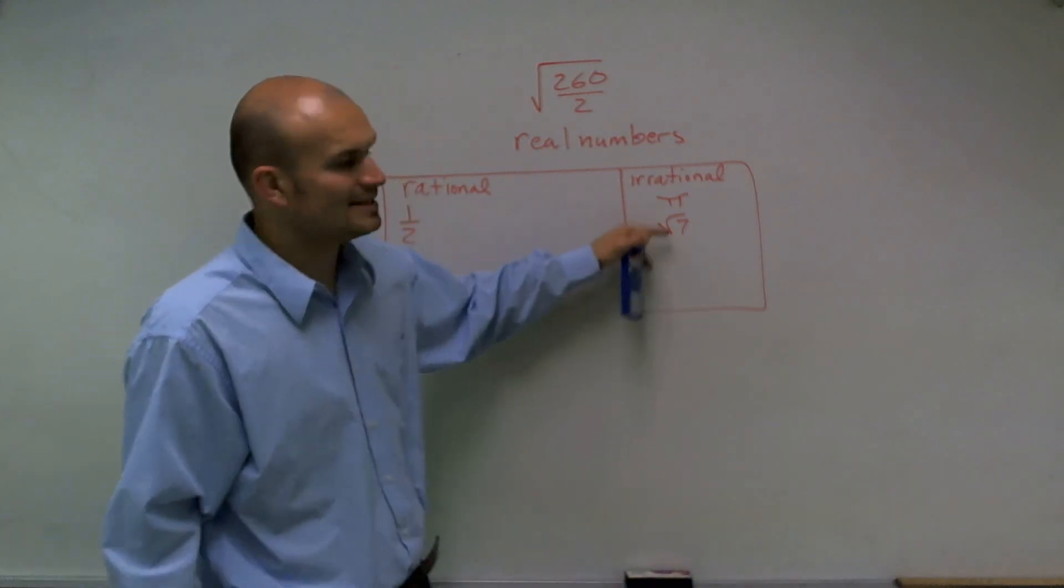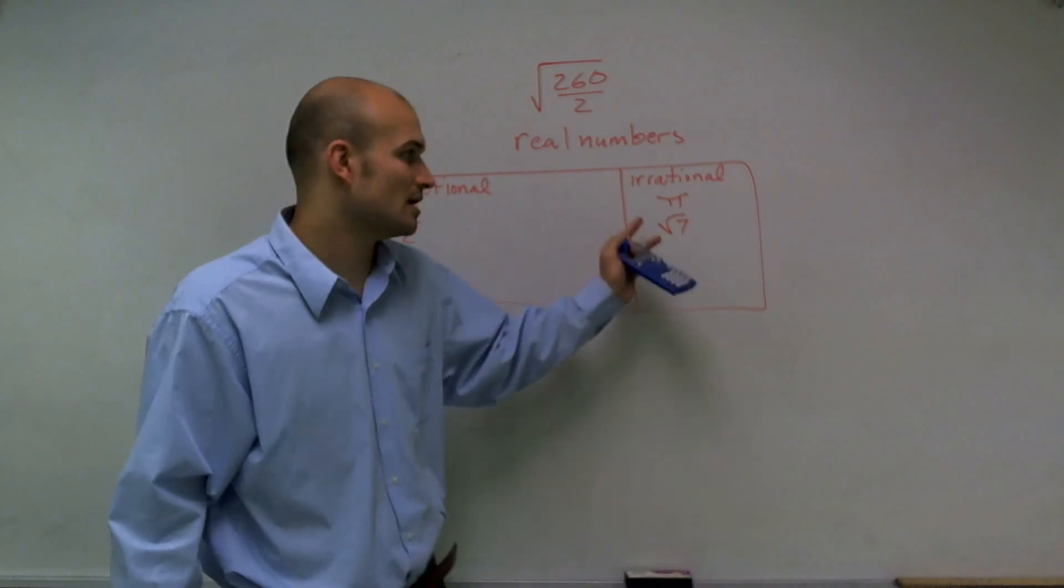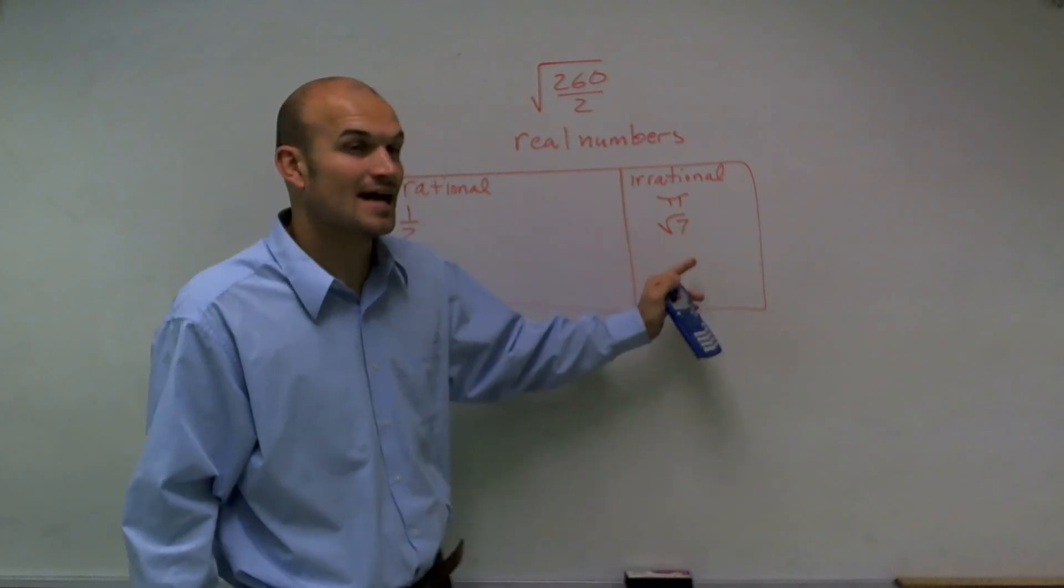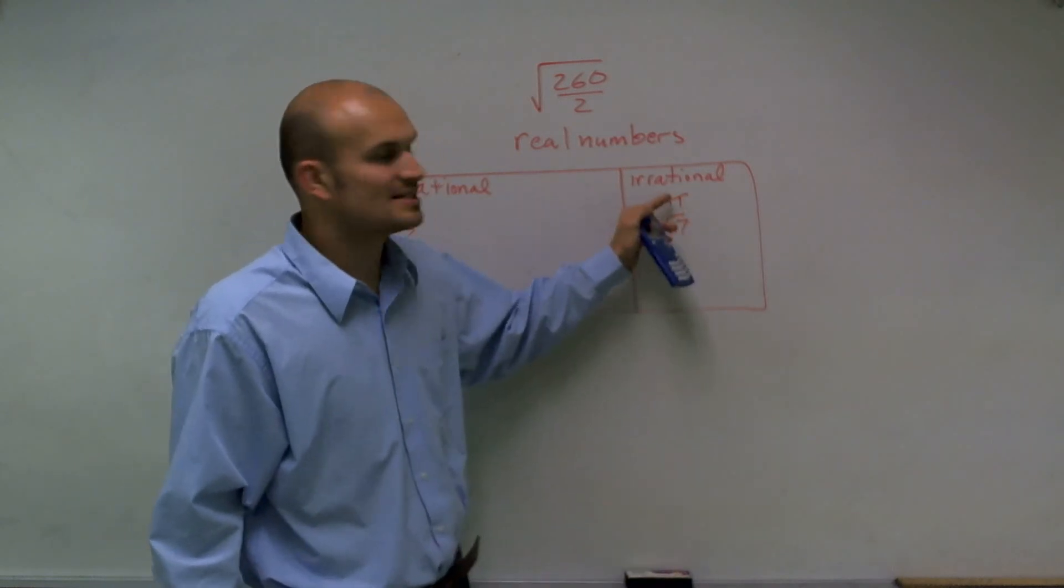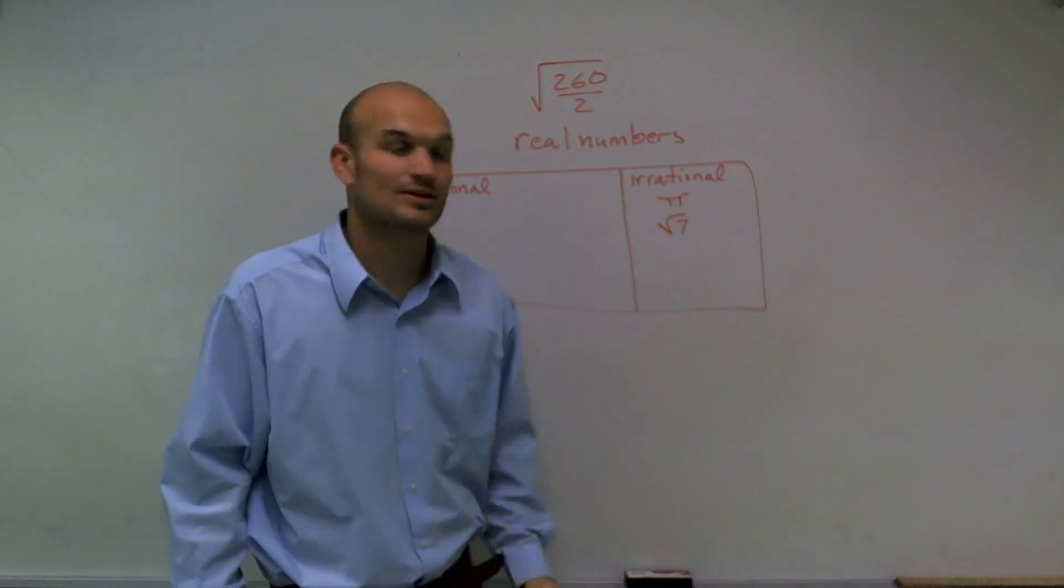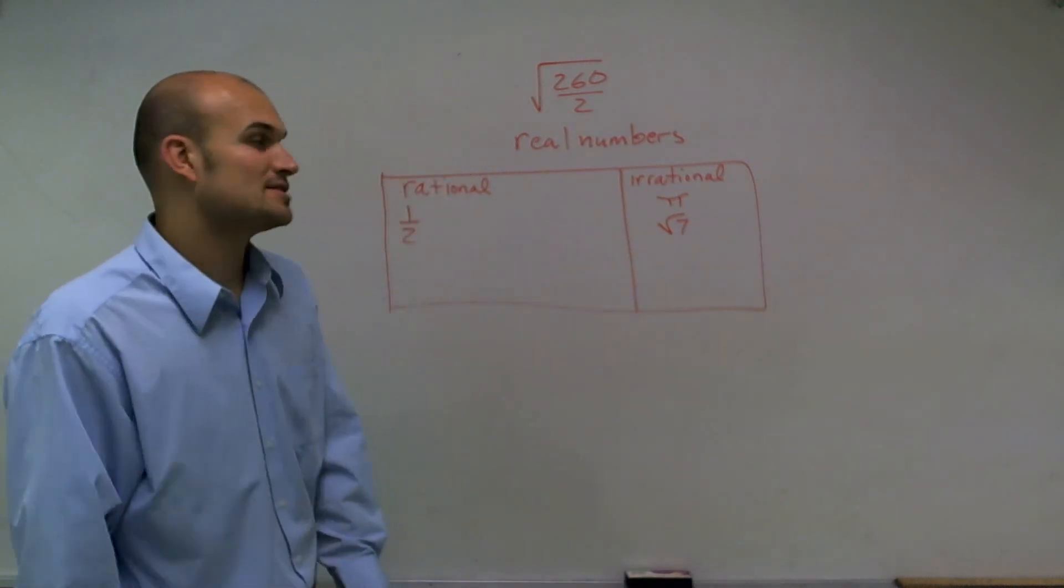So I cannot write these exact numbers on just a sheet of paper, the exact value of them. We have to use these symbols to represent their exact value. And so that's why these are irrational numbers.